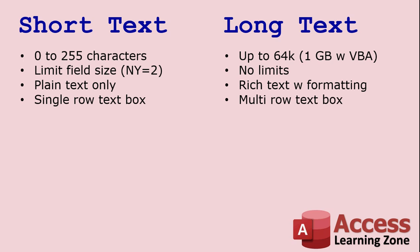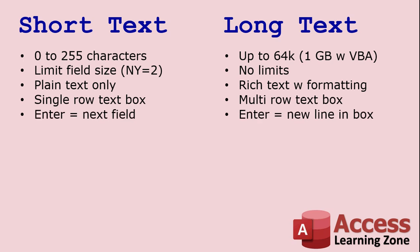When you add these as fields on a form, a short text will usually come in as a single-row text box, whereas long text will come in as a multi-row text box with a scroll bar. Of course, those are just defaults — you can change that. And the enter key behavior: if you press enter in a short text field it'll go to the next field, whereas enter in a long text field defaults to going to a new line in the text box. Again, those are settings that can be changed at the form level.